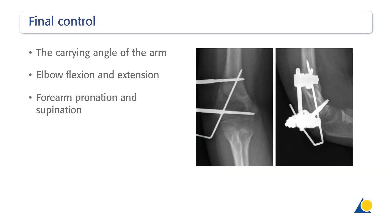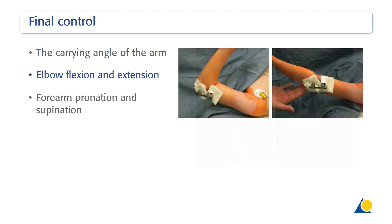Clinically, after definitive fixation, the stability and axial alignment must be checked radiologically. The following parameters must be identical to the contralateral side: the carrying angle of the arm, elbow flexion and extension, and forearm pronation and supination.